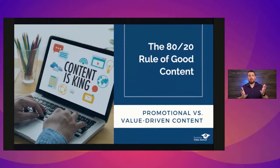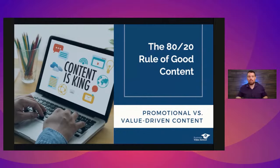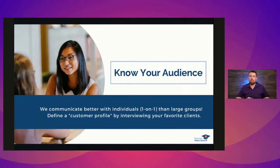Try to use this ratio: four value-driven videos for every one promotional video. If you use that ratio, you're going to keep your audience engaged, they're going to like you, they're going to be excited to see your next video, and they're not going to mind when you are promotional. In fact, they're going to be more likely to take action. So if you're going the influencer route, have at least four posts completely beneficial to your viewer before you promote a sponsor or something you're trying to sell.